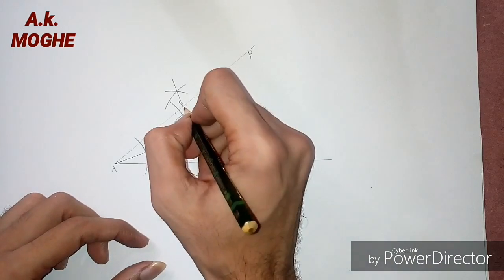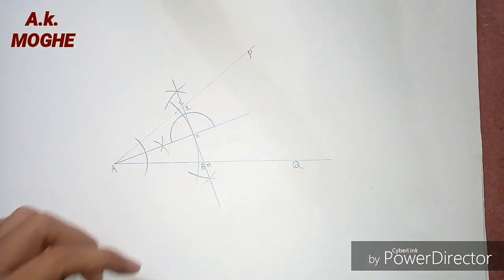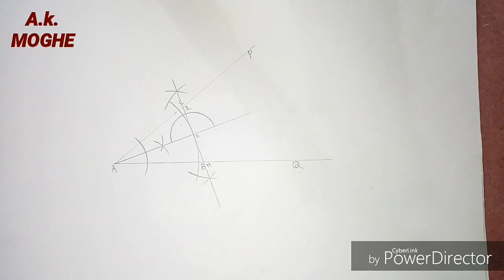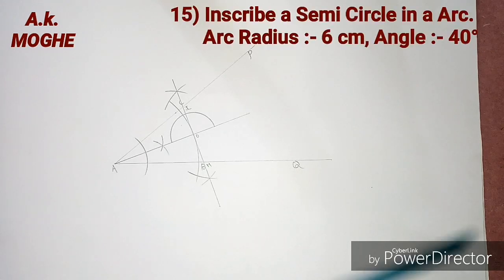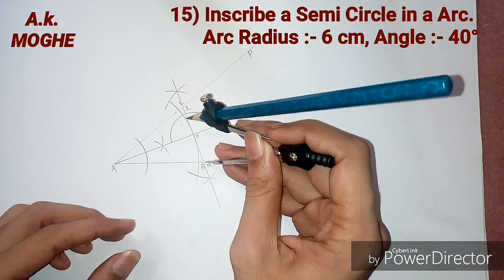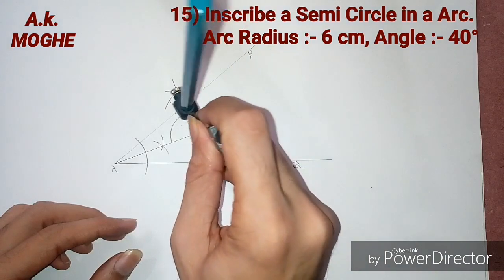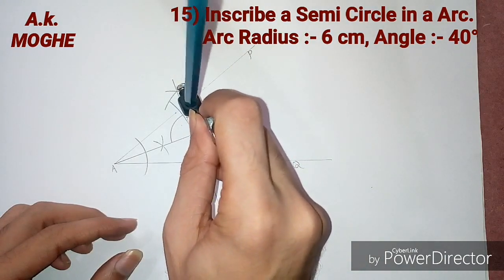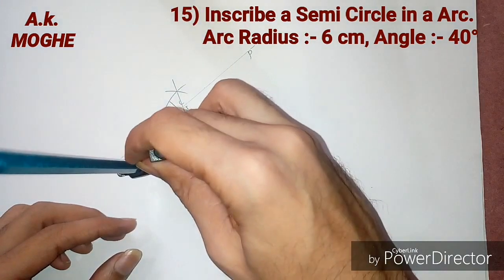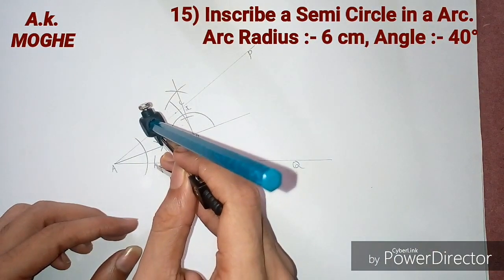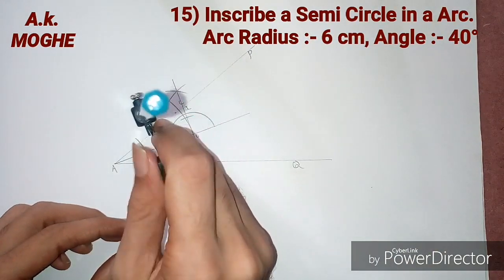Then we will bisect angle H into 2 equal parts. How to bisect an angle? The procedure we already know: marking two points on either side of the angle and again take a common intersection point.